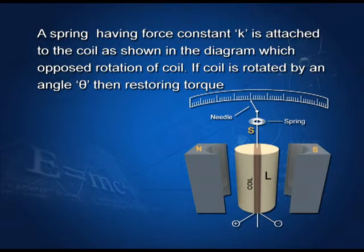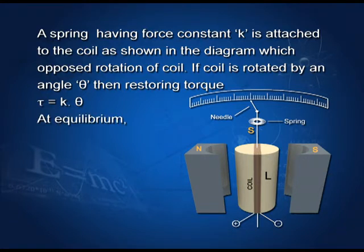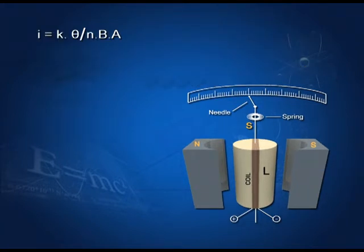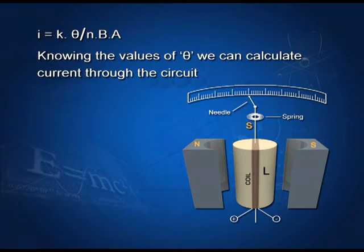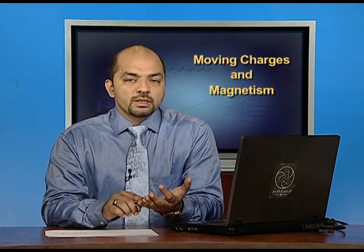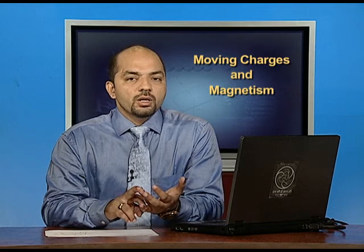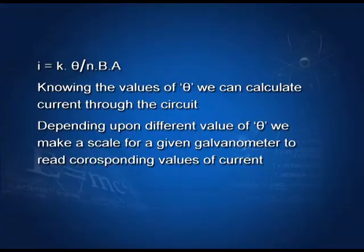If at any instant the coil is rotated by angle θ, the restoring torque equals Kθ. At equilibrium, NBIA equals Kθ. From this, the current I equals Kθ divided by NBIA. Knowing the values of θ, we can calculate the current. Since K, N, B, and A are all constants for a given galvanometer, we make a scale based on different values of θ to read corresponding values of current.